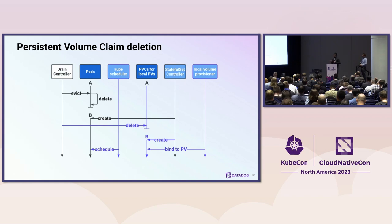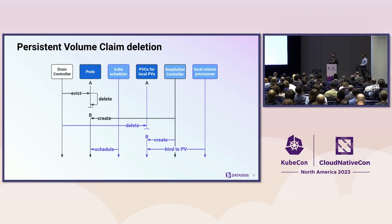It's worth noting that before Kubernetes 1.27, the stateful set controller creating a new PVC would not happen automatically. One of our team members, Raul, contributed an upstream fix so that the stateful set controller would look at missing PVCs at all phases of the lifecycle for stateful set pods, not just when stateful set pods are being created.